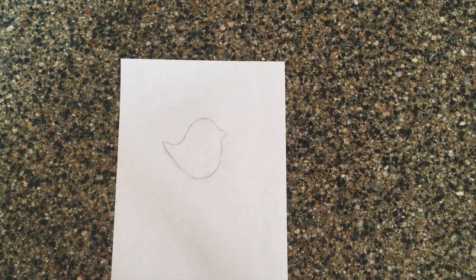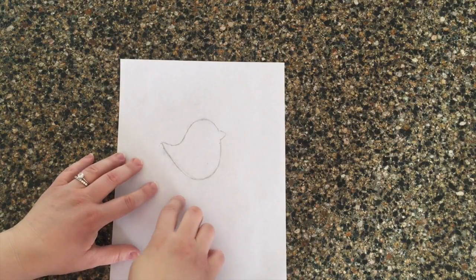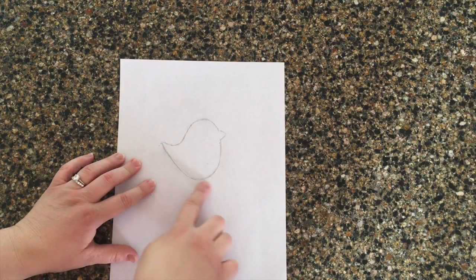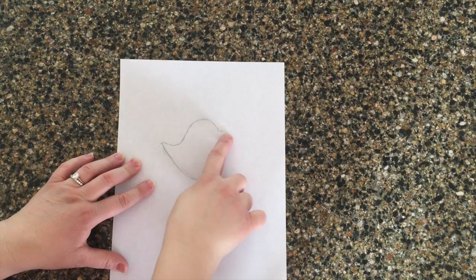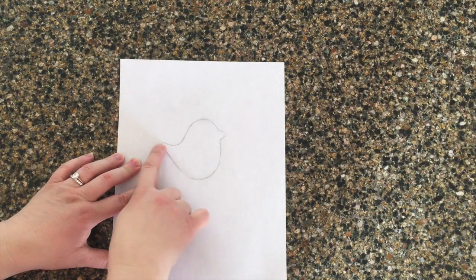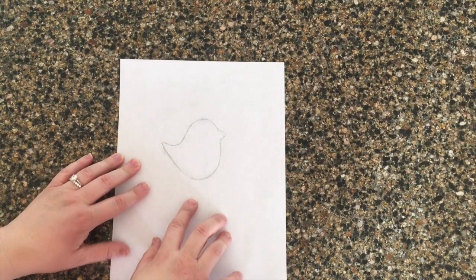Next take out your template or picture. You'll want to choose a simple shape for your first cookie cutter. I've chosen this bird because it's simple and it has both curved and angled pieces. Two techniques you'll need to make any cookie cutter.